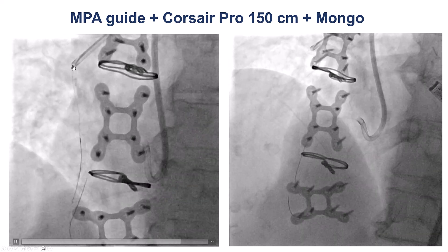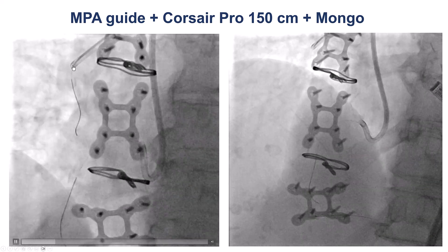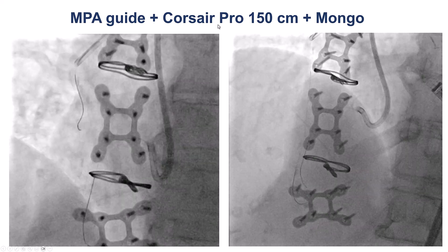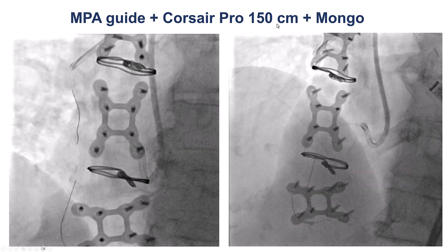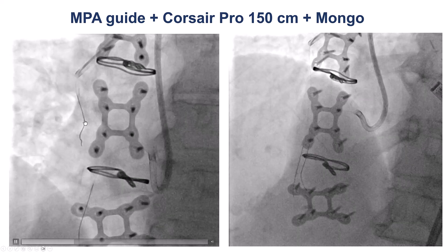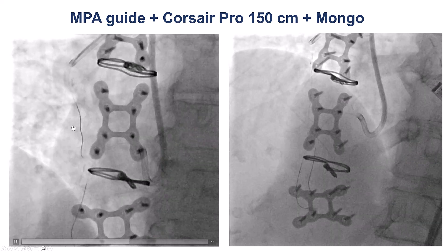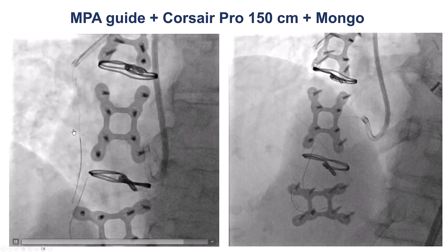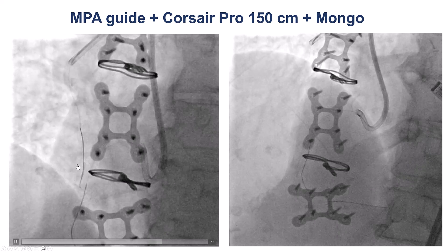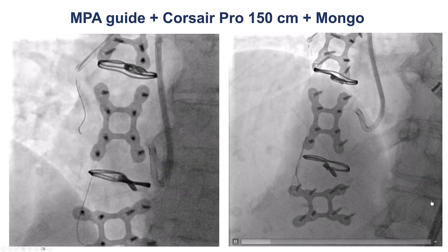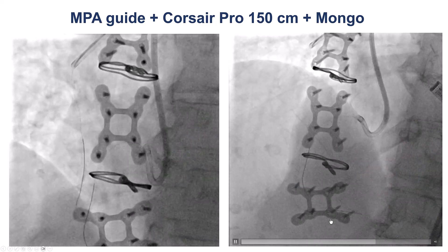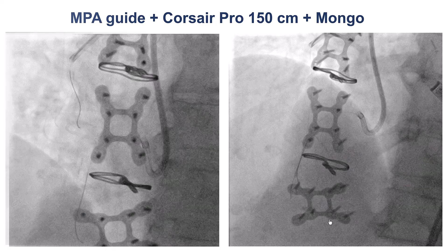The most common way for crossing vein grafts is to use a large microcatheter like the Corsair with a polymer-jacketed guide wire, and the Gladius Mongo was used in this case. Fortunately, the wire went very easily through the saphenous vein graft and advanced all the way towards the anastomosis with the native vessel.